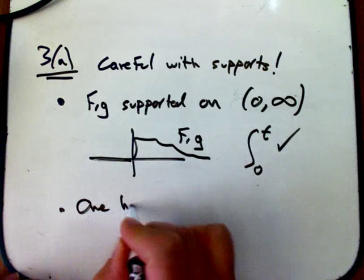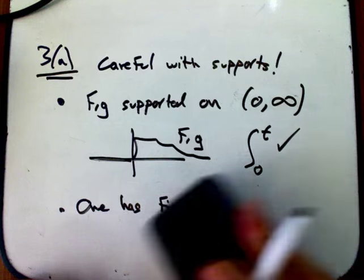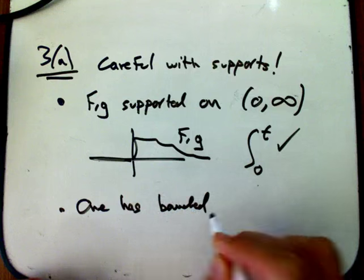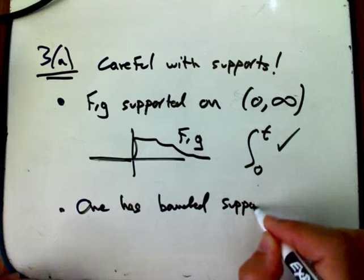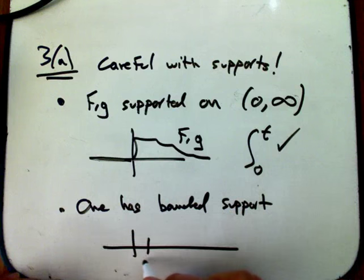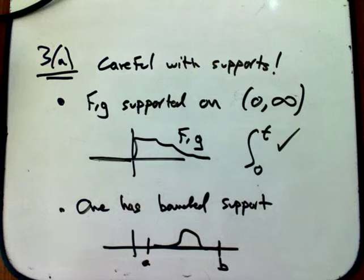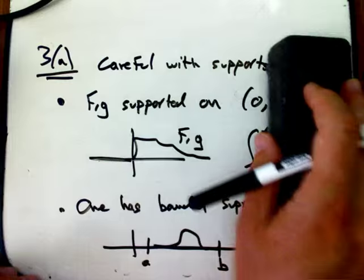Or, one has a finite support. I really shouldn't say finite support. I don't want to imply the support is a finite set, like just a few points. Let's say bounded support. That's better. Support in an interval of finite length. And then the other one can have as big a support as you want. We'll come back to those issues. Support, and especially like bounded support, things like that, it's going to be very important.